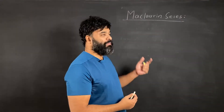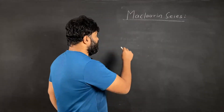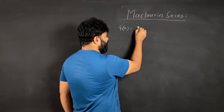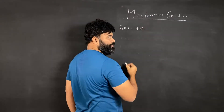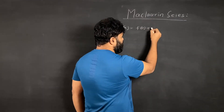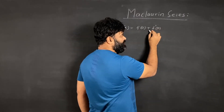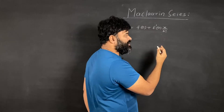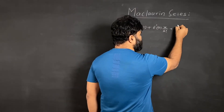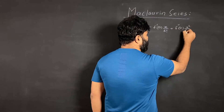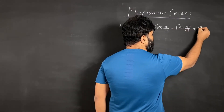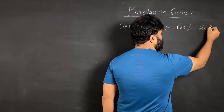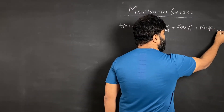Let me begin with the expression for Maclaurin series. If you have a function f of x, you can write it as f of 0, plus f dash of 0 times x divided by 1 factorial, plus f double dash of 0 times x squared divided by 2 factorial, plus f triple dash of 0 times x cubed over 3 factorial, and so on.